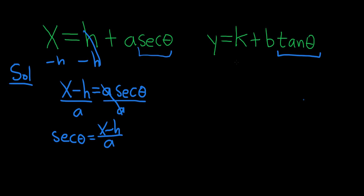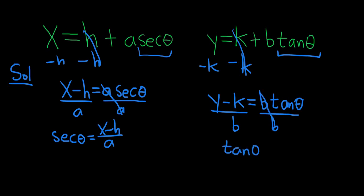Okay, same thing over here. We'll subtract k from both sides, so that'll leave us with y minus k, and this equals b times the tangent of theta. Good stuff. As before, we'll divide by b, again assuming that b is not zero, otherwise this would be a silly problem. So the tangent of theta equals y minus k over b.